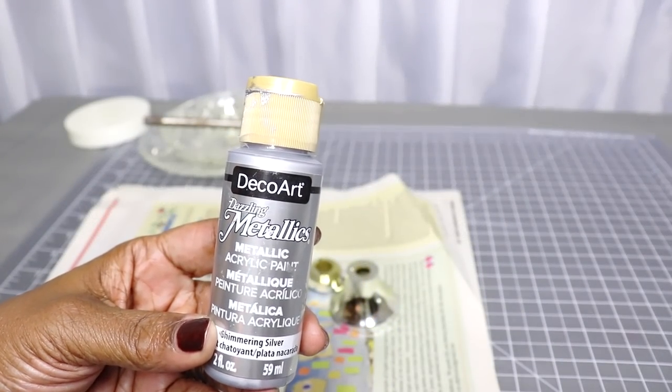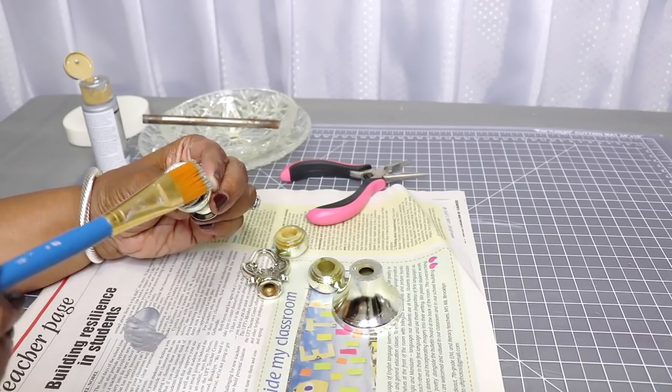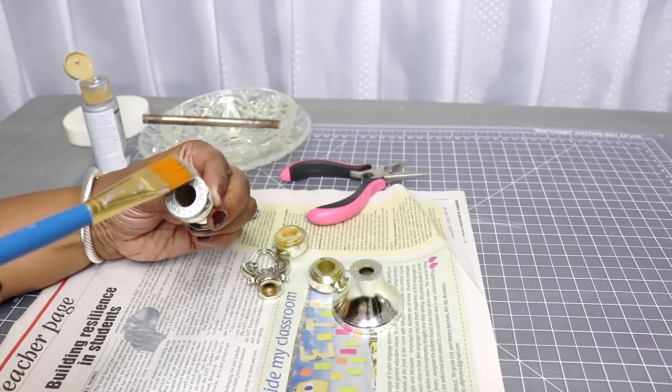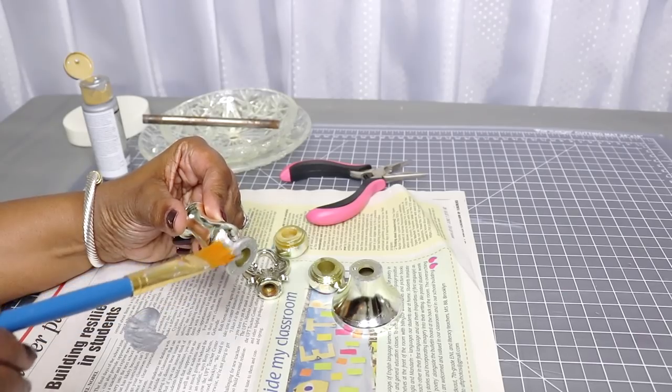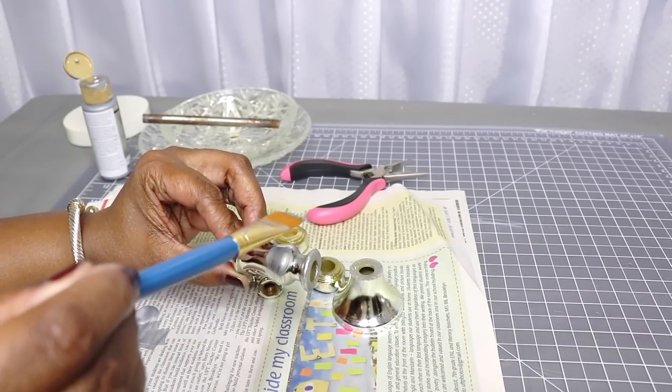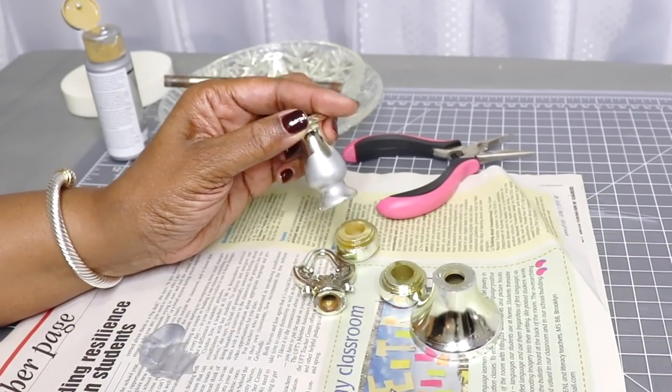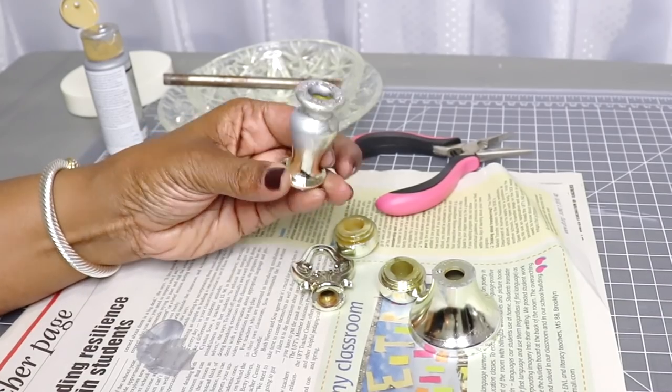So here I'm going to use the DecoArt metallic paint in shimmering silver and I'm just going to paint all the smaller pieces, all the pieces that were in the center of the candy dish. I'm going to paint those silver. I'm going to let it dry for about 20 minutes and then I'm going to paint them all again so it is a nice solid shimmering gray color.